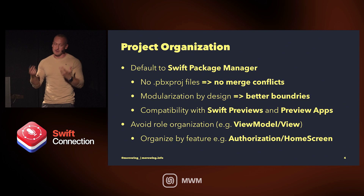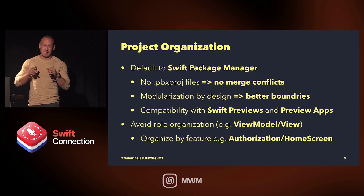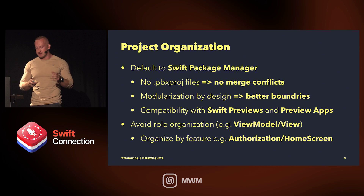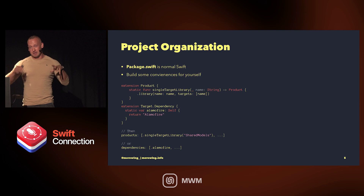I create a module called app feature in my SPM definition and embed everything into that, so the PBX project file is simply a host for that one thing. That means merge conflicts you had to deal with in the past are pretty much gone. It also forces you to modularize by feature, which I've been a fan of for over a decade. Organizing by role — view models together, views together, models together — is a mistake, because when I change a view I usually have to change the model too. SPM also makes it more possible to use Swift previews.